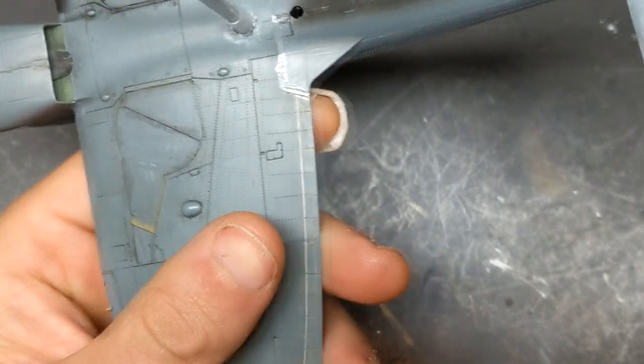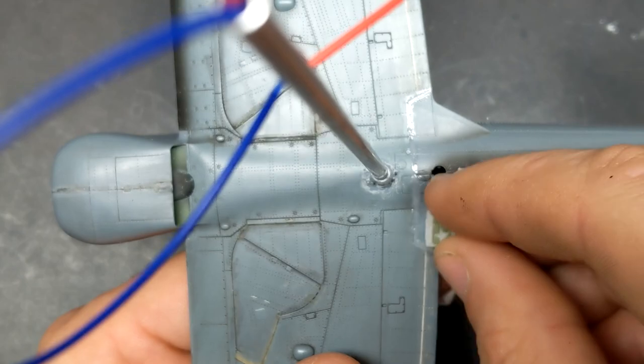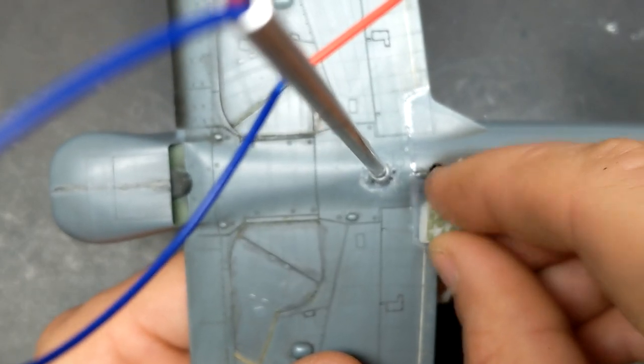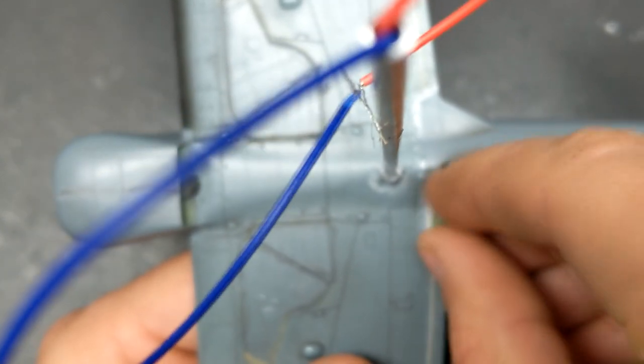I left the post in place while the sprue goo dried, that way I'd be able to remove it afterwards to make it easier to paint and continue handling. And then I filled in the gap at the rear of the trailing edge of the wing with some more sprue goo. And then it's time for some more sanding.